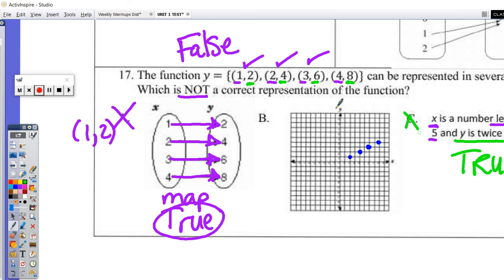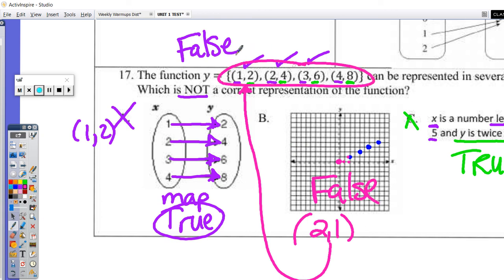So by process of elimination, we know our answer is B, but why is it B? Well, it's kind of blurry here, I know that. But if we were to plot our points, here's the origin. If I go over 2 and up 1, that would be my first coordinate. Notice that what I have here is backwards from what I have there. So this is a false representation of these points. They're plotted backwards. They're plotted incorrectly. My answer is B.